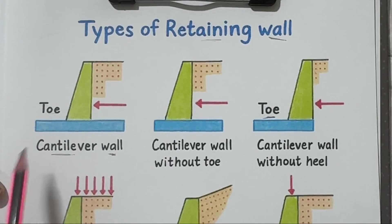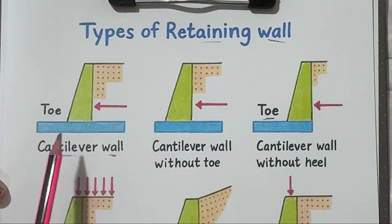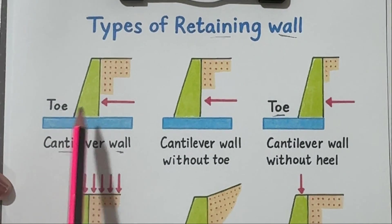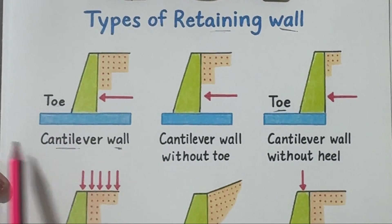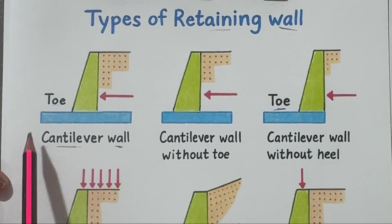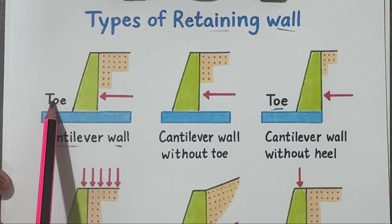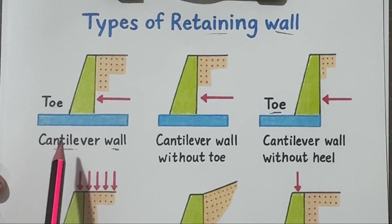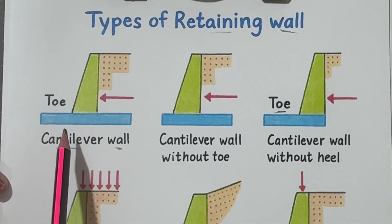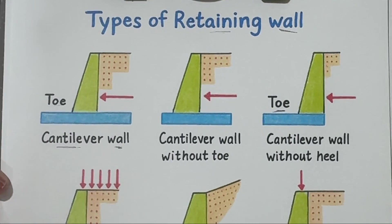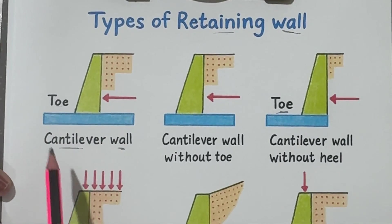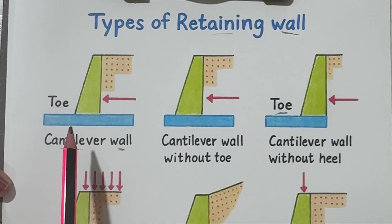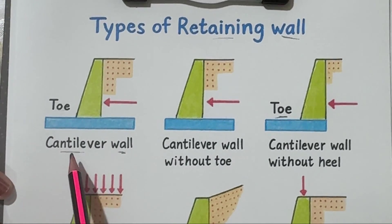Number one: cantilever wall. This is the most common type. It looks like an L-shaped wall made of reinforced concrete. The bottom slab has two parts: the toe in front and the heel under the soil. The weight of the soil pressing down on the heel helps keep the wall stable. The vertical part, called the stem, resists the pressure from the soil behind it.